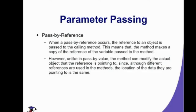Pass by reference occurs when a reference to an object is passed to the calling method. The method makes a copy of the reference of the variable, but unlike pass by value, the method can modify the actual object that the reference is pointing to. Even though different references are used in the methods, they point to the same memory location. Pass by reference mostly occurs with arrays because arrays create a reference value in their memory allocation.